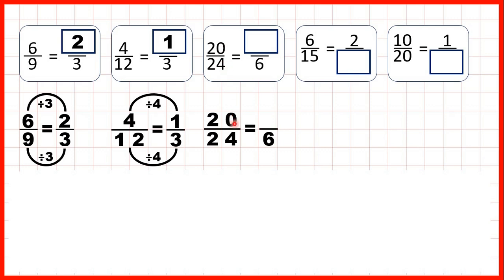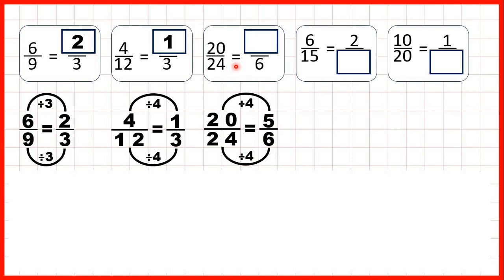Now we have 20 over 24, and we need to find an equivalent fraction which has a denominator of 6. 24 divided by 4 is 6, because 6 times 4 is 24. And again, what we do to the denominator, we need to do to the numerator as well. 20 divided by 4 is 5. So 20 over 24 is equivalent to 5 sixths.